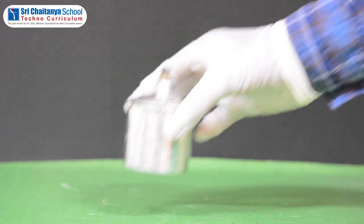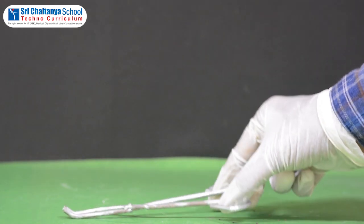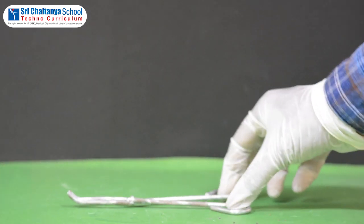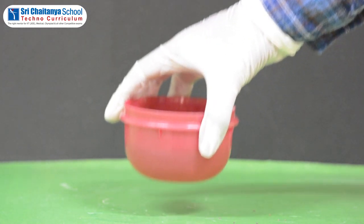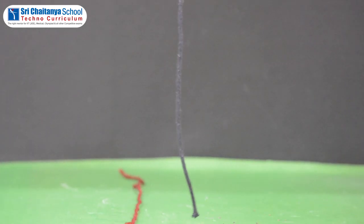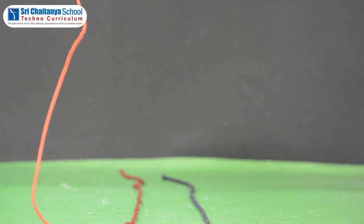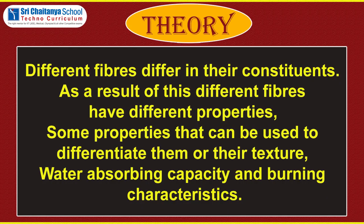The materials required are: a spirit lamp, a dish containing water, and different fibers like wool, cotton, silk, and synthetic fiber like nylon.